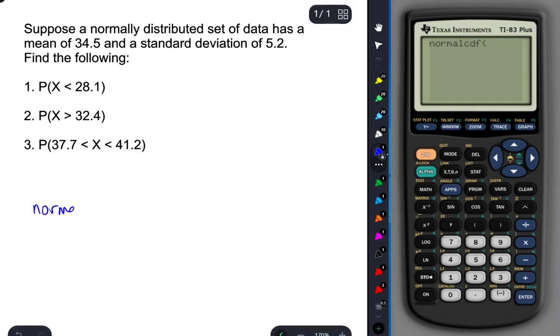So we would do Normal CDF, like before, a lower bound and an upper bound, and then a mean and a standard deviation.